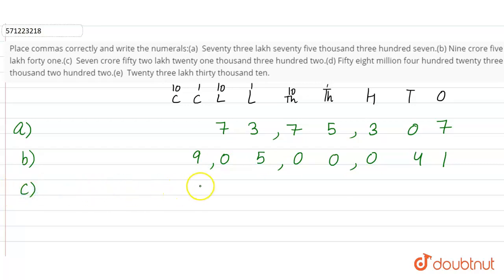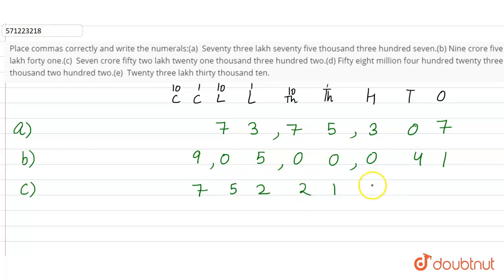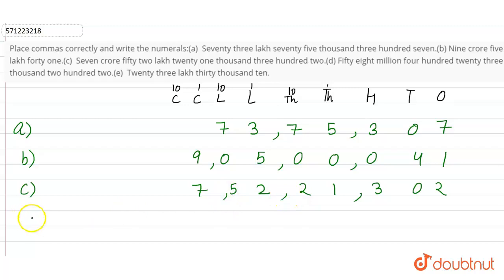Part C: 7 crore, 52 lakhs, 21,302 — and in commas like this: 3, 2, 2, 2, 2.